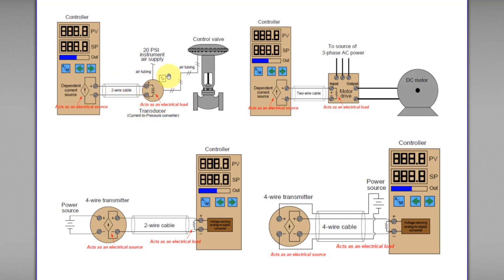This IP transducer acts as an electrical load. How about this circuit? Again, this controller will provide a power source to power the loop. Because of this, this controller acts as an electrical source. And then this VFD acts as an electrical load.